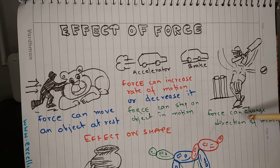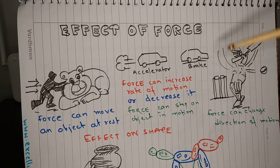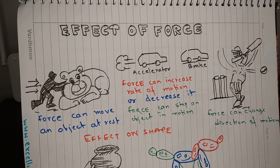Force can also change the direction of motion. This figure shows a batsman playing a hook shot. The ball is coming straight from in front of him, and once the batsman hits the ball, the direction of motion of the ball changes — it goes to the boundary or wherever the batsman aims. The same thing can be observed in football when a player kicks the ball, or in hockey, or even in carrom — you can see how force can change the direction of motion.